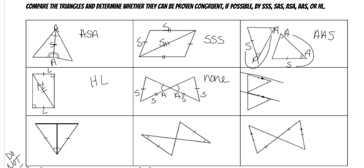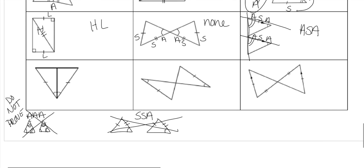Because we have parallel lines cut by a transversal, these are corresponding angles and are also congruent. So we have angle-side-angle on this triangle and angle-side-angle on that one, which makes it angle-side-angle. All I'm doing is writing either an A next to an angle or an S next to a tick mark, and that tells me what it's going to be. They share this side, so that's a side, then an angle, and a side — same with the other triangle. So it's side-angle-side.